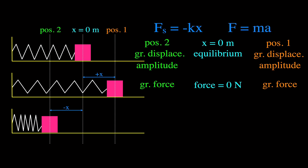Using Newton's second law — F equals ma — we can analyze acceleration. At the equilibrium position, the net force is zero, so the acceleration is also zero meters per second squared. At positions one and two, where we have the greatest displacement and greatest force, Newton's second law tells us we also have the greatest acceleration, directed back toward equilibrium.